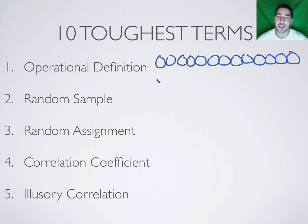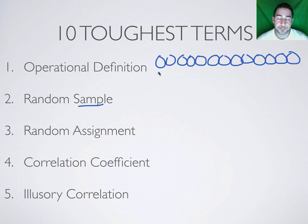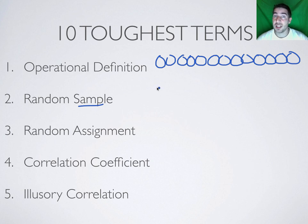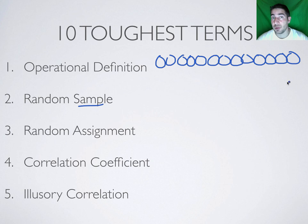Once I get my population, I have to get a sample from that population. A random sample means that from those people, I'm getting a completely random selection that hasn't been influenced by myself at all — it's completely independent of my control. It also controls for things like gender, socioeconomic status, and intelligence level. If you have a truly random sample, all those things should be pretty even so that when you get results, you know they can be attributed to what you're trying to find.